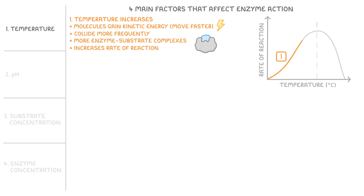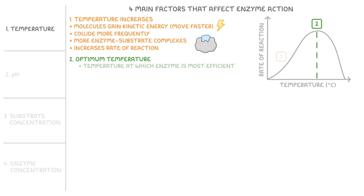If you then increase the temperature a little more, you reach a sweet spot called the optimum temperature, which is this peak on our graph here. The optimum temperature is the temperature at which an enzyme is most efficient and so gives the maximum rate of reaction.